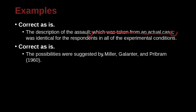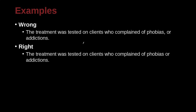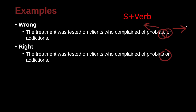'The possibilities were suggested by Miller, Galanter, and Pribram.' Remember that last serial comma before 'and.' Now another example: 'The treatment was tested on clients who complained of phobias or addictions.' The incorrect version has a comma before 'or,' but for the correct version there is no comma. Remember that if you use a conjunction with a comma, you must have an independent clause — subject and verb — both before and after. Since that condition is not met here, no comma.